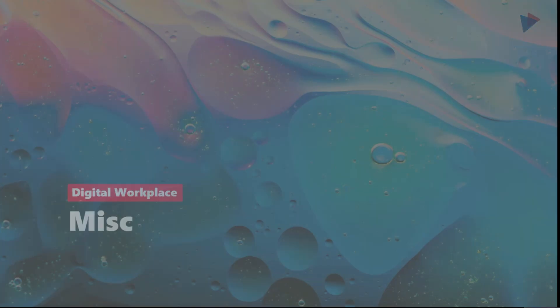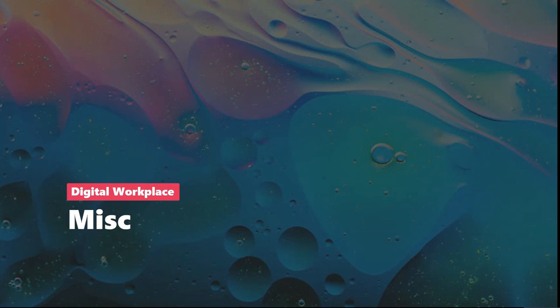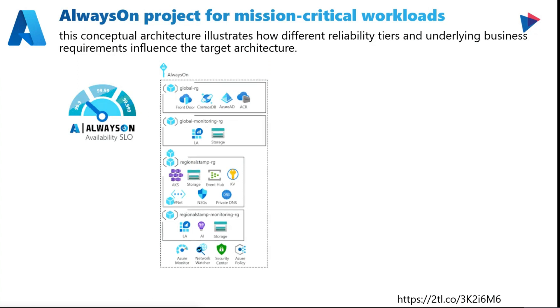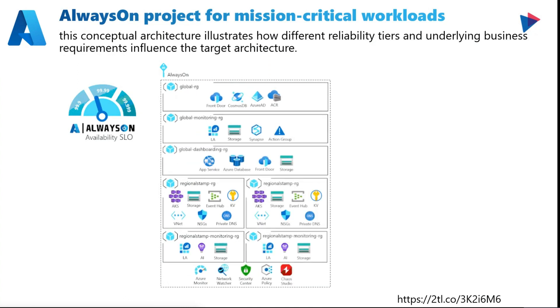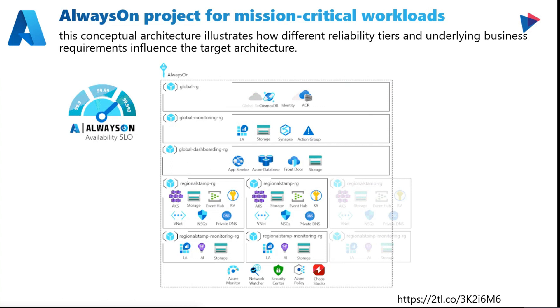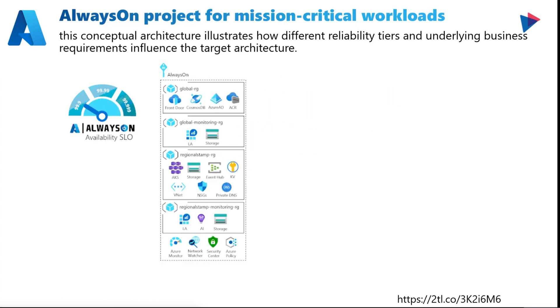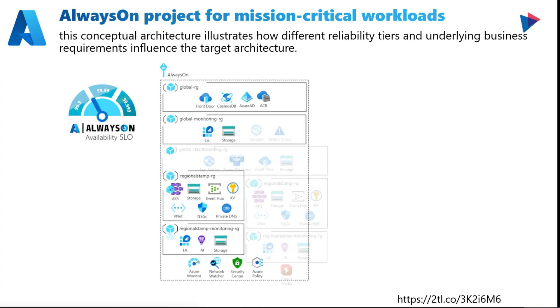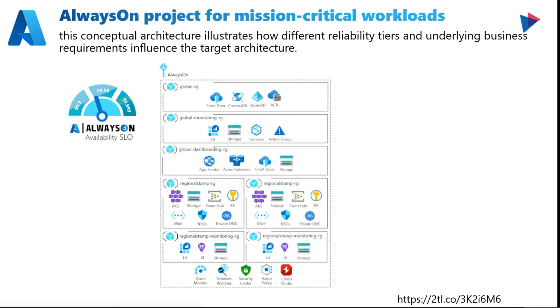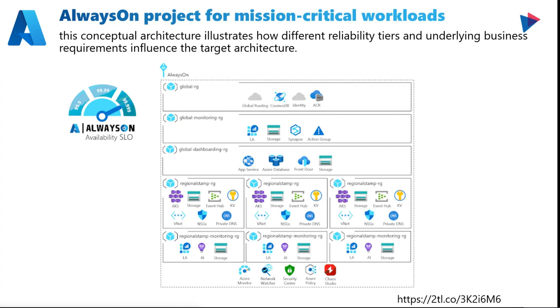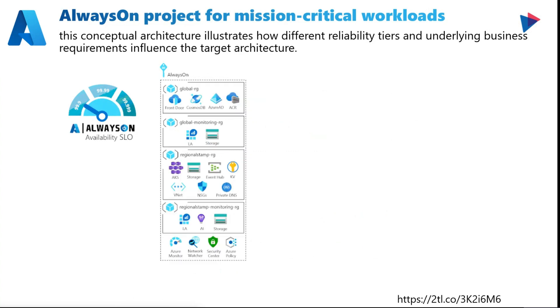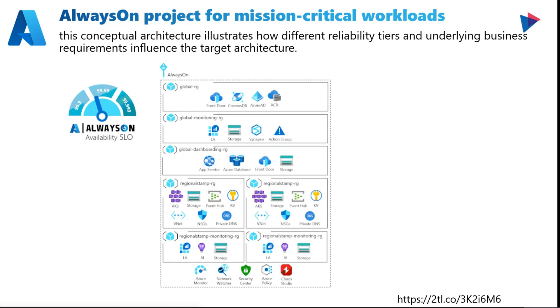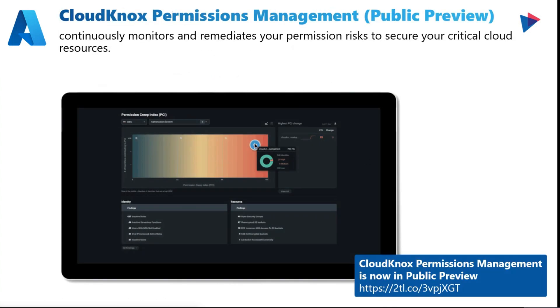Pretty fantastic. Beyond the digital workplace, expanding into Azure and other platforms, Microsoft has recently shared their Always On product for mission-critical workloads. This conceptual architecture illustrates how different reliability tiers and underlying business requirements influence the target architecture. Organizations seeking guidance and reference deployments will benefit greatly from this on how to scale their applications to be always on.